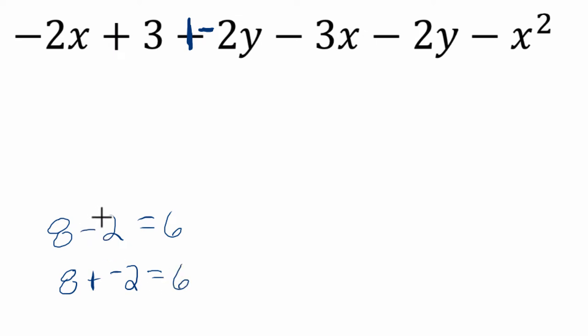So subtracting positive 2, or we usually won't write the positive sign, but I'll put it in there, is the same thing as adding a negative 2. Now this idea becomes really helpful in combining like terms. If I rewrite this as the addition of negatives, I find I'm less likely to lose track of the signs.